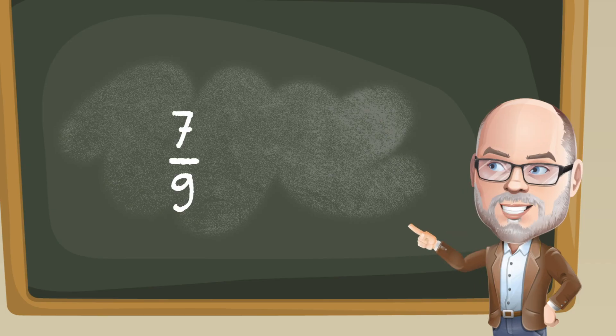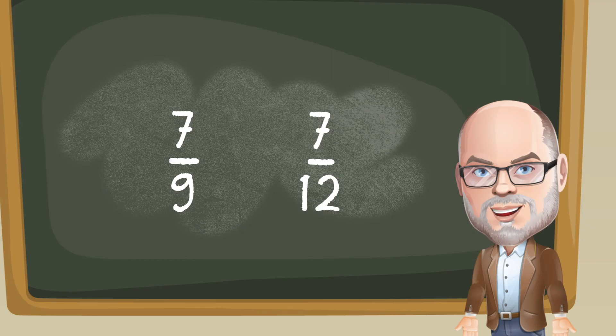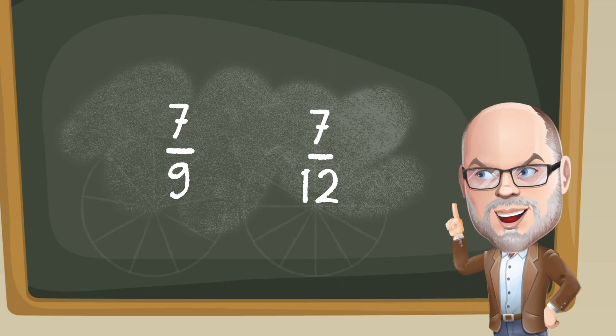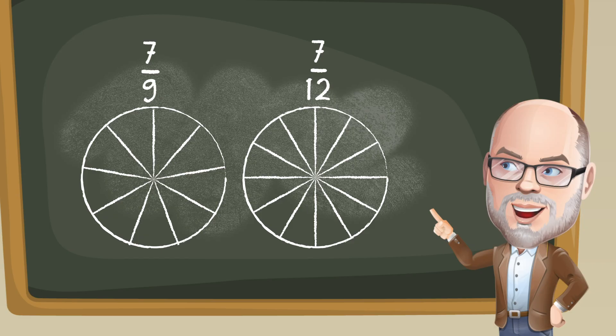Think about 7 9ths and 7 12ths. With these two fractions, we have the same number of parts, 7. All we have to do is think about the size of those parts. 9ths are going to be larger than 12ths.